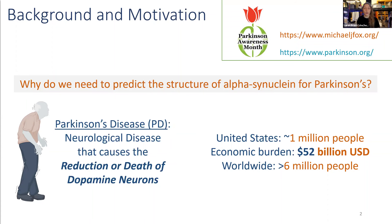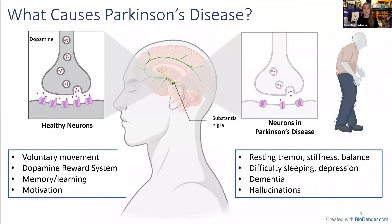In this presentation, I will answer why we need to predict the structure of alpha-synuclein in order to understand Parkinson's. So what exactly is Parkinson's disease? In the normal brain, the neurotransmitter dopamine, here represented as small red dots, is transported within lipid vesicles and released across neuronal synapses to transmit chemical signals. This process controls voluntary movement, our reward system, memory, and motivation.